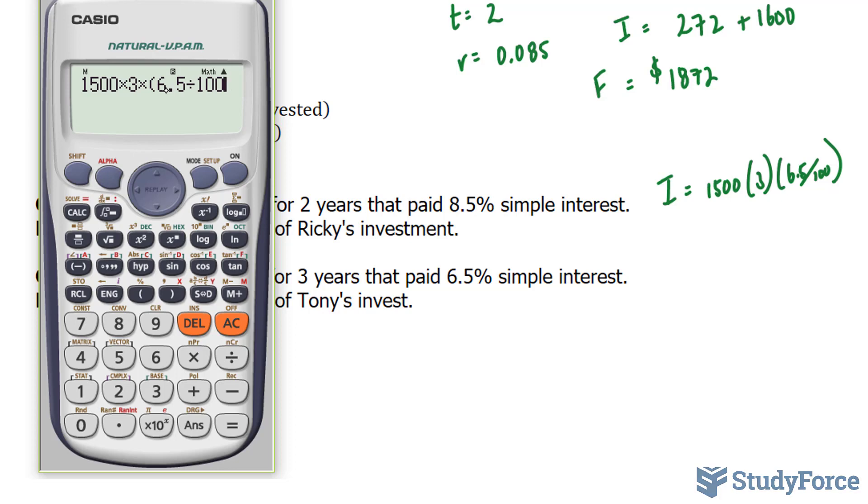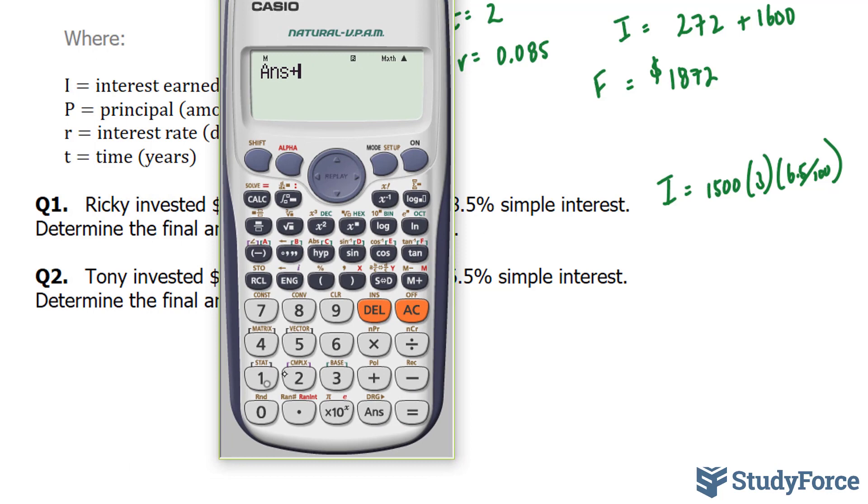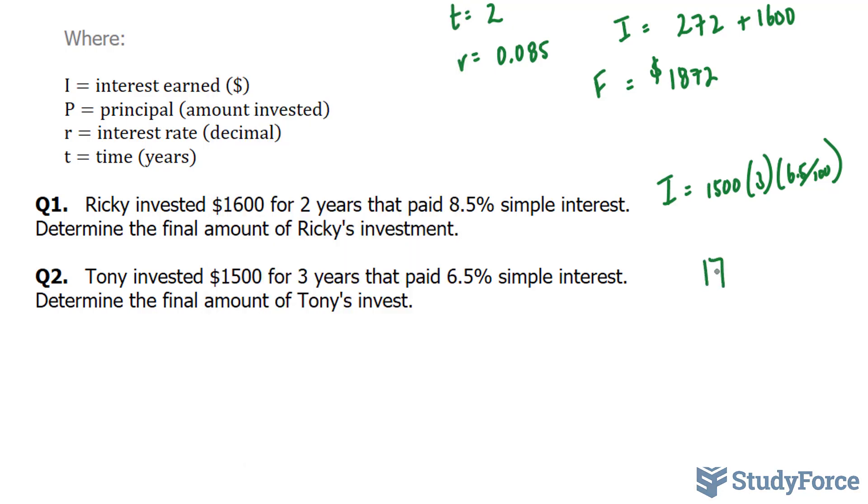And you'll notice that I didn't convert it beforehand. And that's fine. Because as long as you keep track, we end up with 292.5. And I'm going to add this now to the principal of 1,500. Skipping a small step. And I end up with 1,792.50.